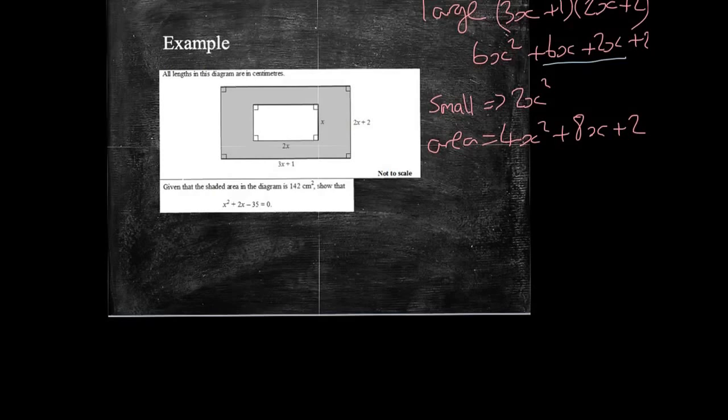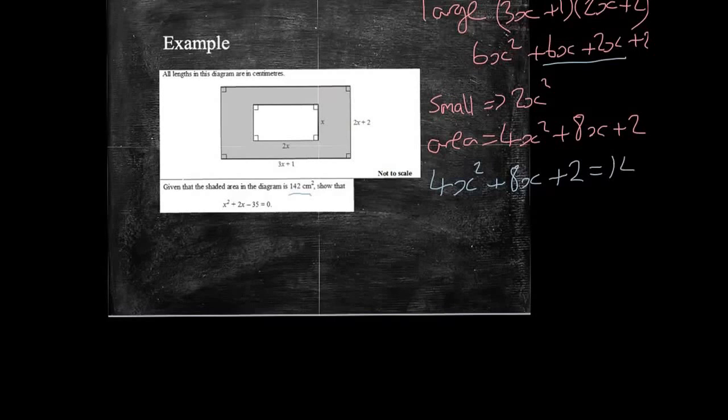The small white rectangle is going to be 2x multiplied by x. So that's going to give me 2x squared. And I need to take the small one away from the big one. So the area of my rectangle is going to be 4x squared plus 8x plus 2. In the question, it told us that the area is 142 centimetres squared. So 4x squared plus 8x plus 2 equals 142.